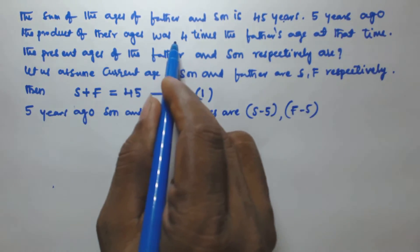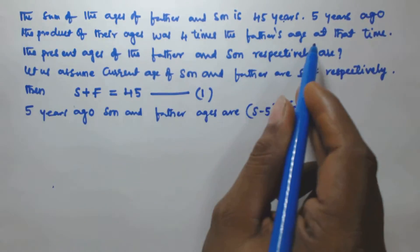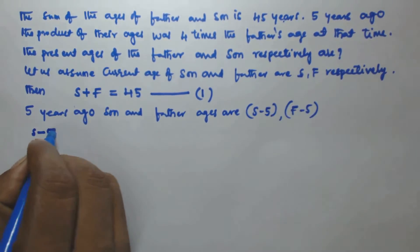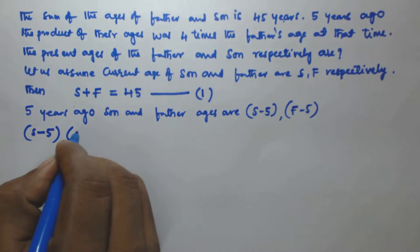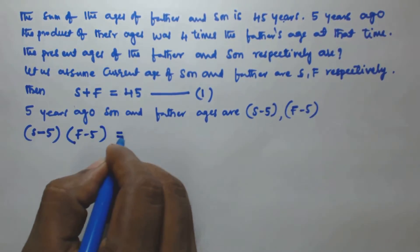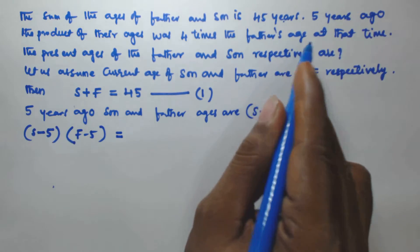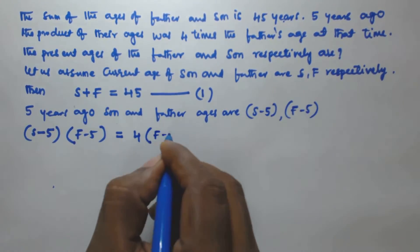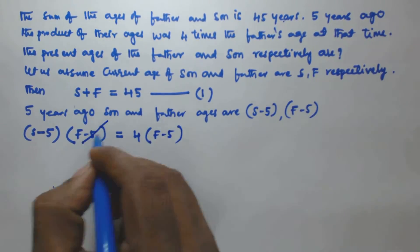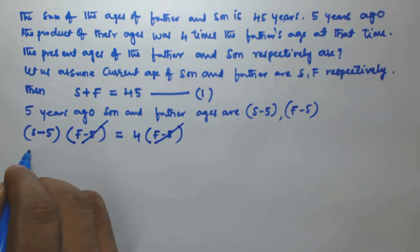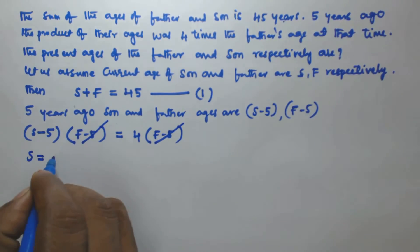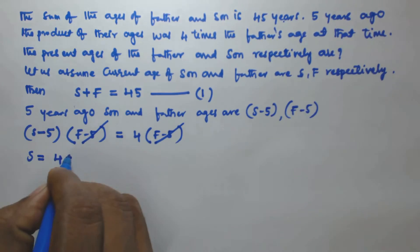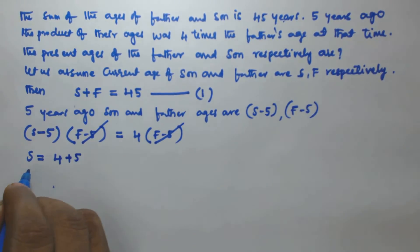The product of their ages at that time was (s minus five) times (f minus five), and that is equal to four times the father's age at that time, which is four times (f minus five). So (f minus five) cancels out, giving s minus five equals four, and therefore s equals nine.